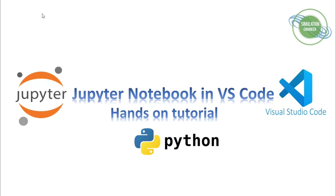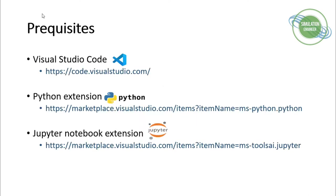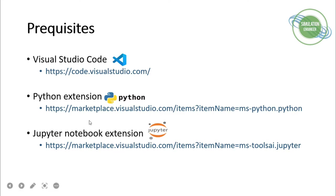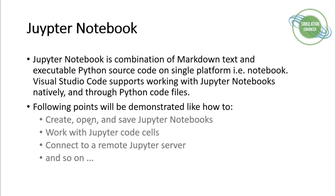The required tools or prerequisites for this tutorial are Visual Studio Code — I've mentioned the link so you can download it if you haven't yet — and the two necessary extensions required to work with Jupyter Notebook within Visual Studio Code: the Python extension and the Jupyter Notebook extension. I'll show you how to install those later in the video.